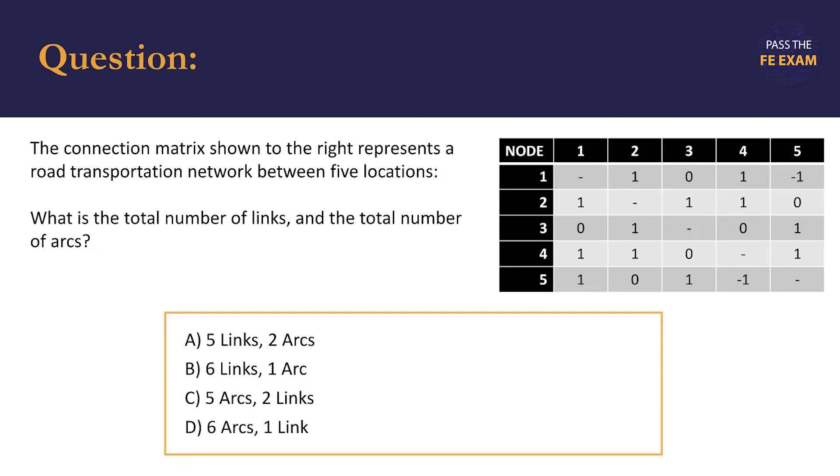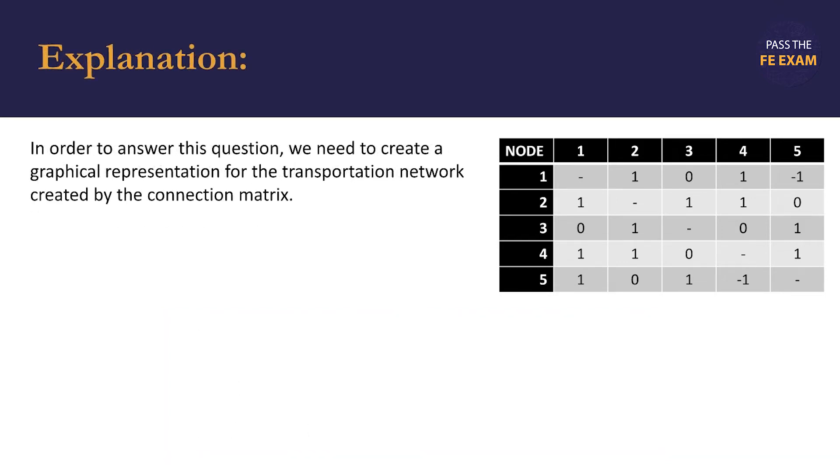In order to answer this question, we need to create a graphical representation for the transportation network created by the connection matrix. But in order to do that, we need to know the definition of terms that we'll use. We need to know what a link is, we need to know what an arc is, and really we need to know how to read that table, and we need to know what nodes are.